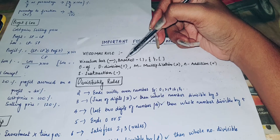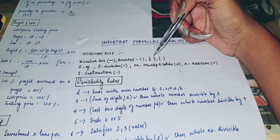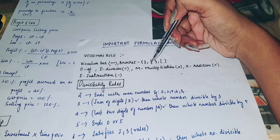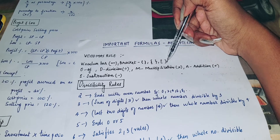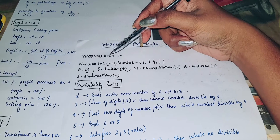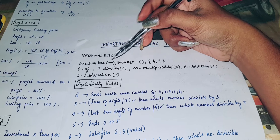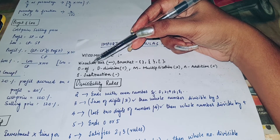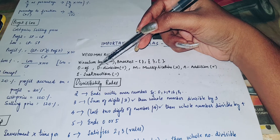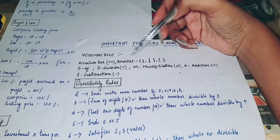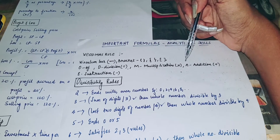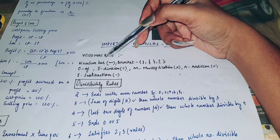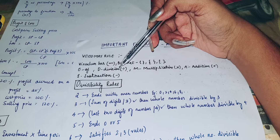Next is Bracket. There is also a priority in the brackets rule. Next, O stands for 'Of', which is nothing but multiplication. Next, D stands for Division, M stands for Multiplication, A stands for Addition, and S stands for Subtraction. This is nothing but VBODMAS rule.